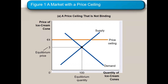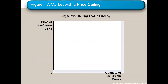Here is a price ceiling that's not binding because it is above the equilibrium. If the maximum price is four and they're selling for three, this price ceiling isn't helping anyone. The market is at three — so that's three and 100. The price ceiling is not binding, or sometimes I say it's not effective. For it to be used, it would have to be below the equilibrium.